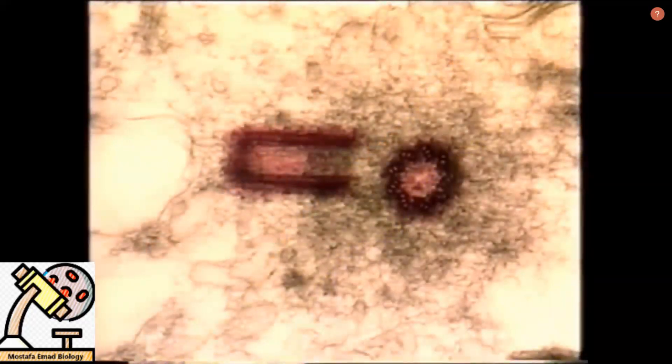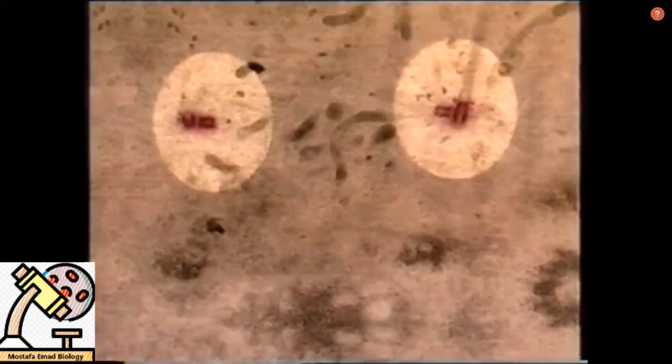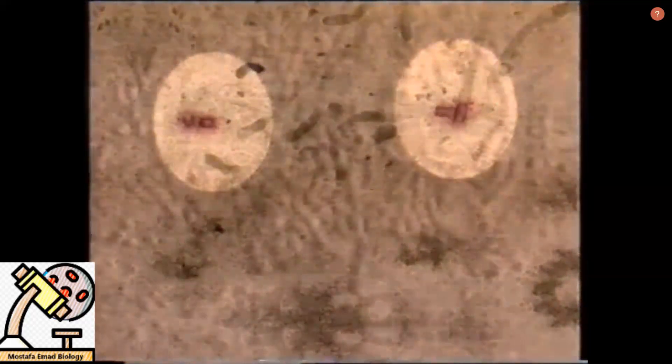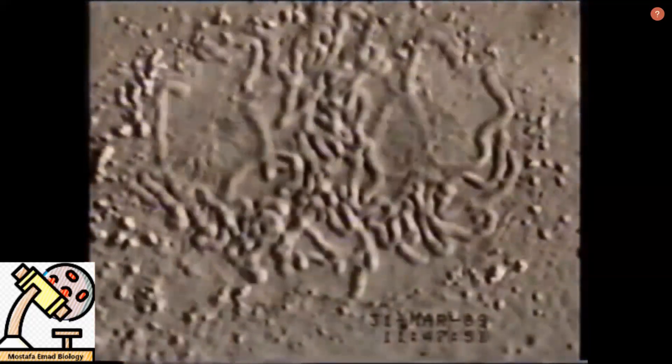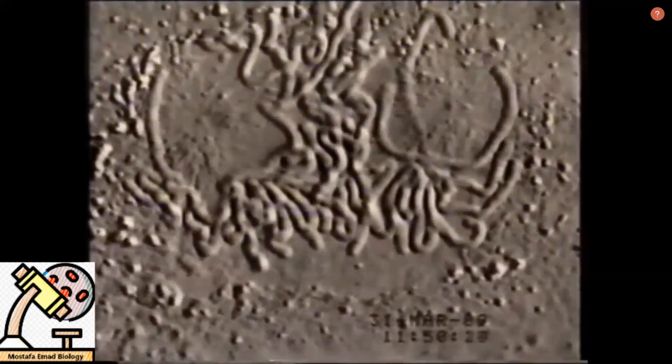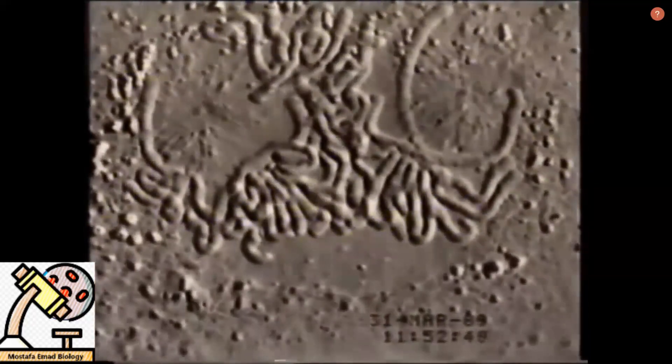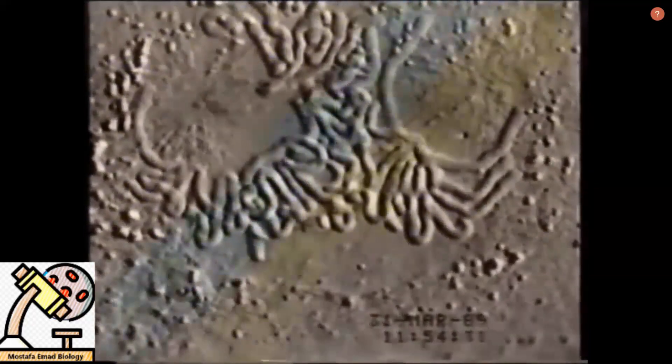Two organelles, called centrioles, replicate, and move toward opposite poles of the cell. Microtubules develop pathways for the dividing organelles and chromosomes to follow when the cells finally separate. Eventually, microtubules attach each pair of chromatids to both centrioles.